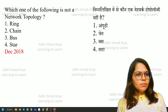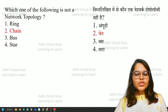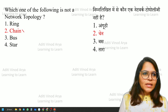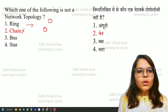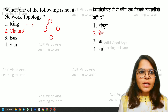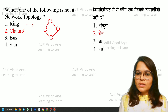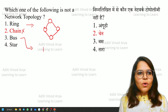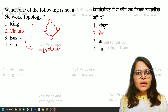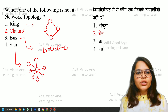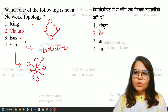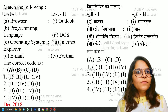Ring is a network topology, bus is a topology, star is a topology. The right answer is chain — we do not have any chain topology. The ring topology has all the nodes interconnected with one single wire, bus includes all the computers in a single line, and star topology has one node connected to all other nodes. The topology which does not exist is chain topology.